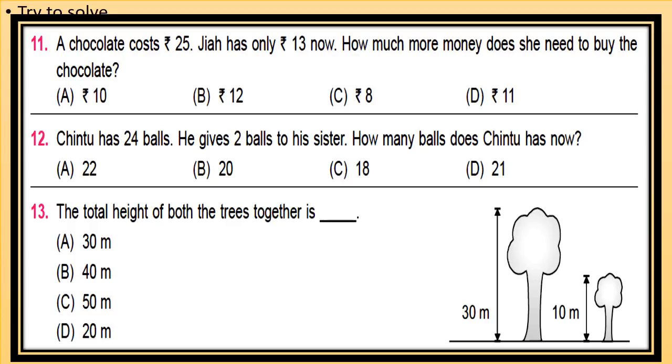The next question is: the total height of both the trees is? Look at the figure. Two trees are given in the picture, one is of height 30 meter, second is of height 10 meter. Now total height of both the trees together will be 30 plus 10.